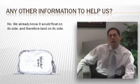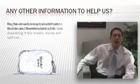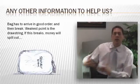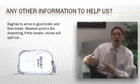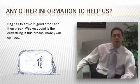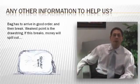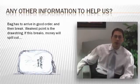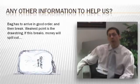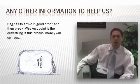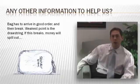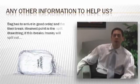We know that it has to arrive in good order and then break. It can't break and then arrive. It has to arrive and then break. The weakest point on this money bag is actually the drawstring. So I guess under this situation, if it's not snagging or ripping, it's rotting. At some point though, this drawstring breaks and the money spills out.